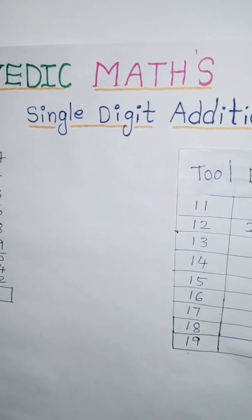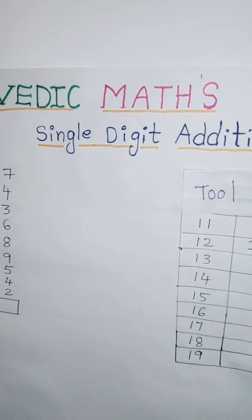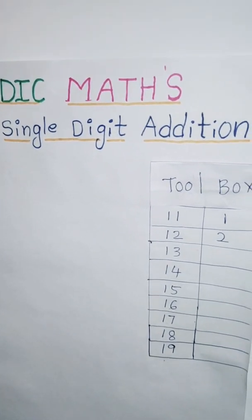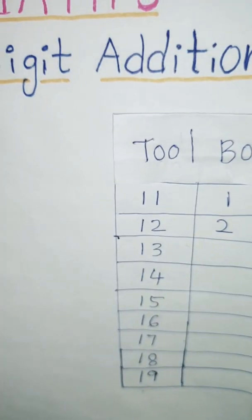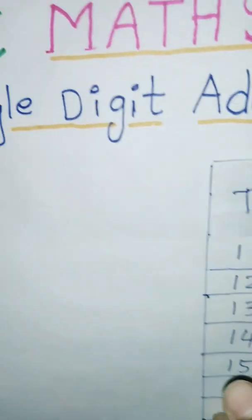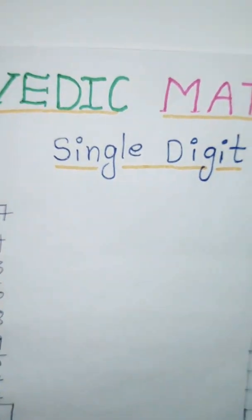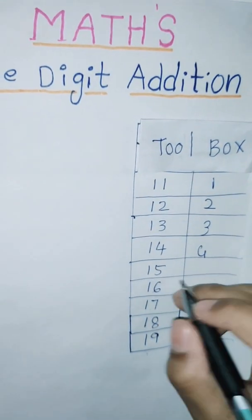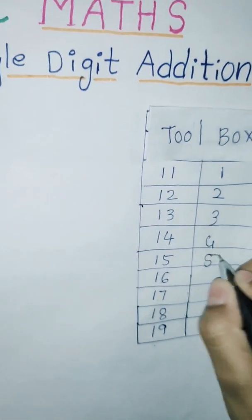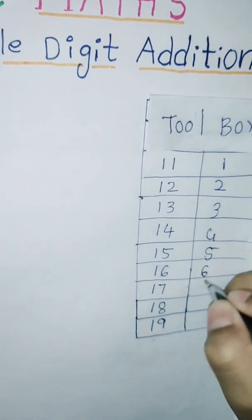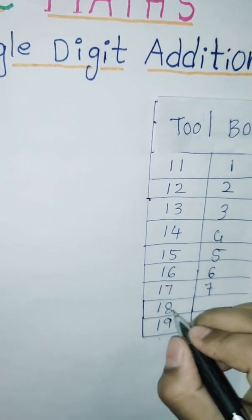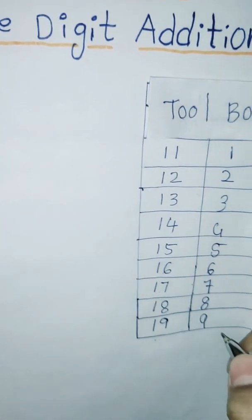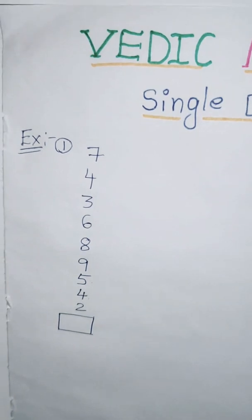There is a tool for single digit addition. Now I am showing the tool. In this tool, we have to take one space number. For level 1 it is 11, for level 2 it is 12, for 13 it is 3, for 14 it is 4, and 15 it is 5. 16 it is 6, for 17 it is 7, for 18 it is 8, for 19 it is 9. Now I am taking example sums.